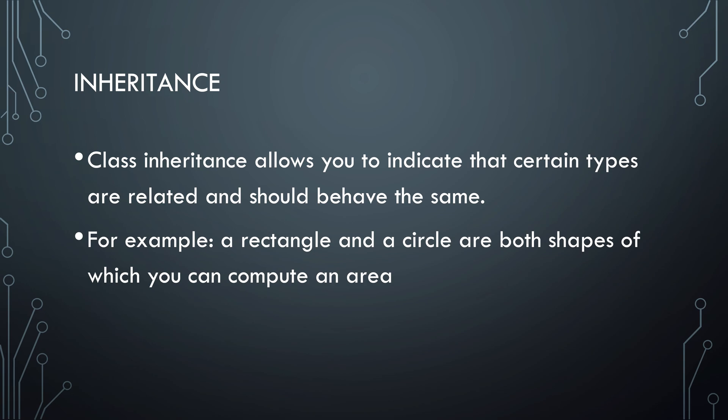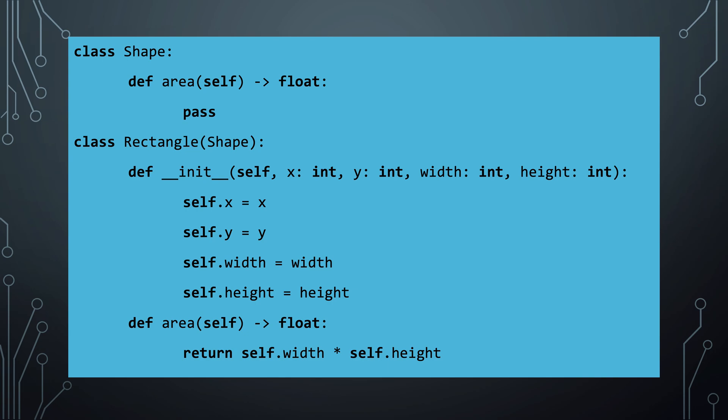These shapes will be easier to use in your code if they all follow the same rules. So the function name, parameters, and return value for computing the area should be the same for all shapes. You don't want rectangle to have an area method that returns an integer while circle returns a float. Inheritance allows you to specify such things. Here you see that there is a class shape that defines an area method. Rectangle inherits from shape and becomes a so-called subclass. You can also say that shape is the superclass, or parent class, of rectangle. Because rectangle inherits from shape, it needs to follow the rules laid out in shape. So this fixes the way that the area method looks like in rectangle.